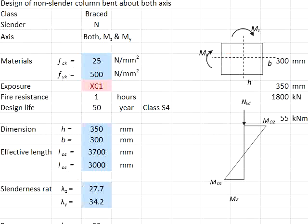To solve this question, I use the Excel spreadsheet to help me work out the solutions. The material strength is 25 and 500 for concrete and steel. Exposure class XC1, fire resistance 1 hour, design life 50 years.